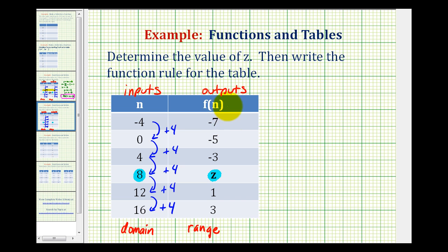Now if we take a look at the outputs, from negative seven to negative five is an increase of two. From negative five to negative three is also an increase of two. So if this pattern holds, then z would be equal to negative three plus two, which would be negative one. So let's go ahead and write in here z equals negative one.